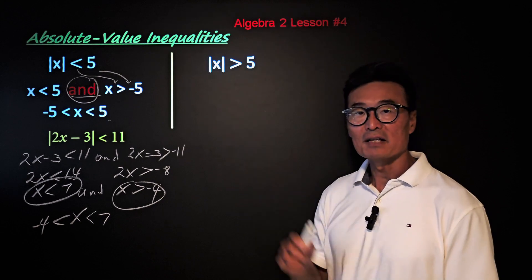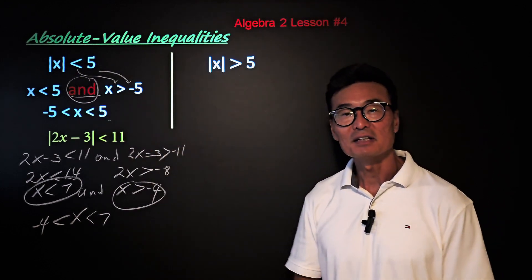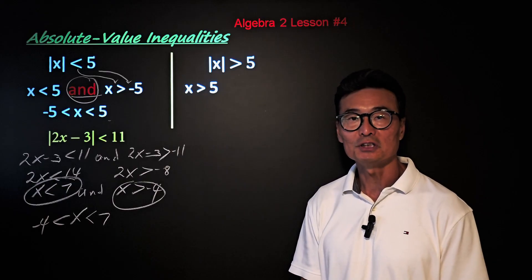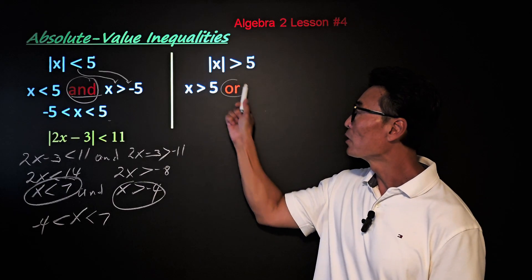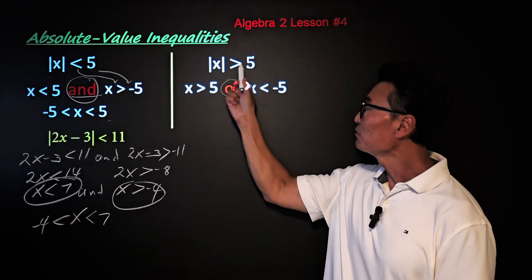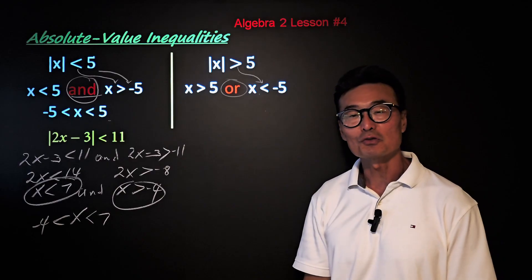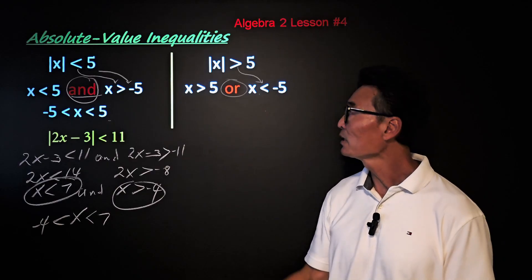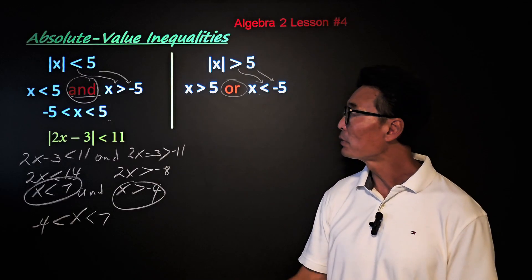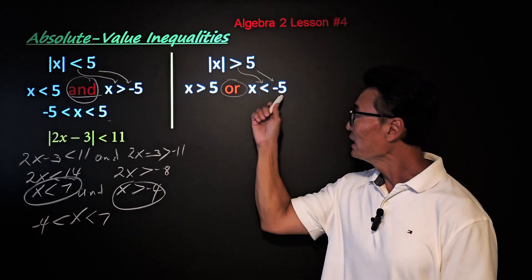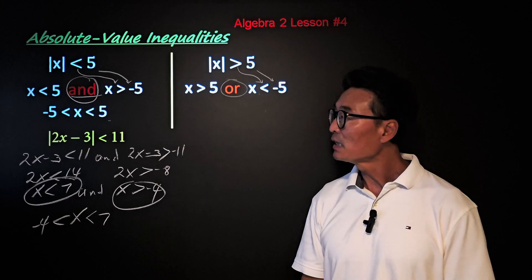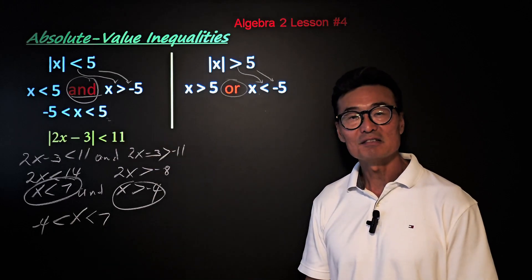What if we use the greater than sign instead of the less than sign? The first inequality is x is greater than 5 for the positive portion. The only difference is that we use the word 'or' in between: x is greater than 5, or x is less than negative 5. Notice for the negative portion you switch the greater than sign to less than and change positive 5 to negative 5. Because a number cannot be greater than 5 and less than 5 at the same time, we use 'or,' and we cannot rewrite it as a single inequality.